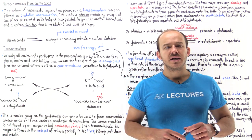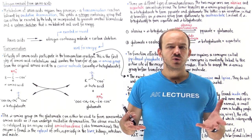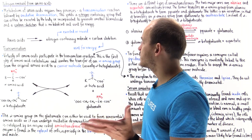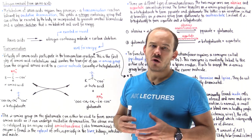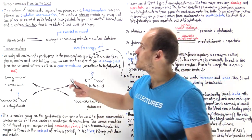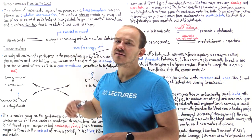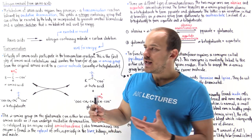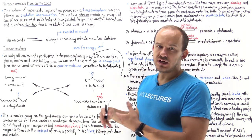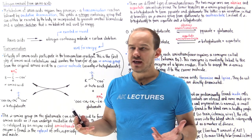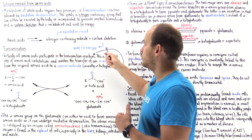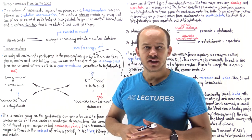The metabolism of amino acids requires two important steps. The first step is called transamination, and the second step is called oxidative deamination. After transamination and oxidative deamination, we form a nitrogen-containing molecule and a carbon skeleton.